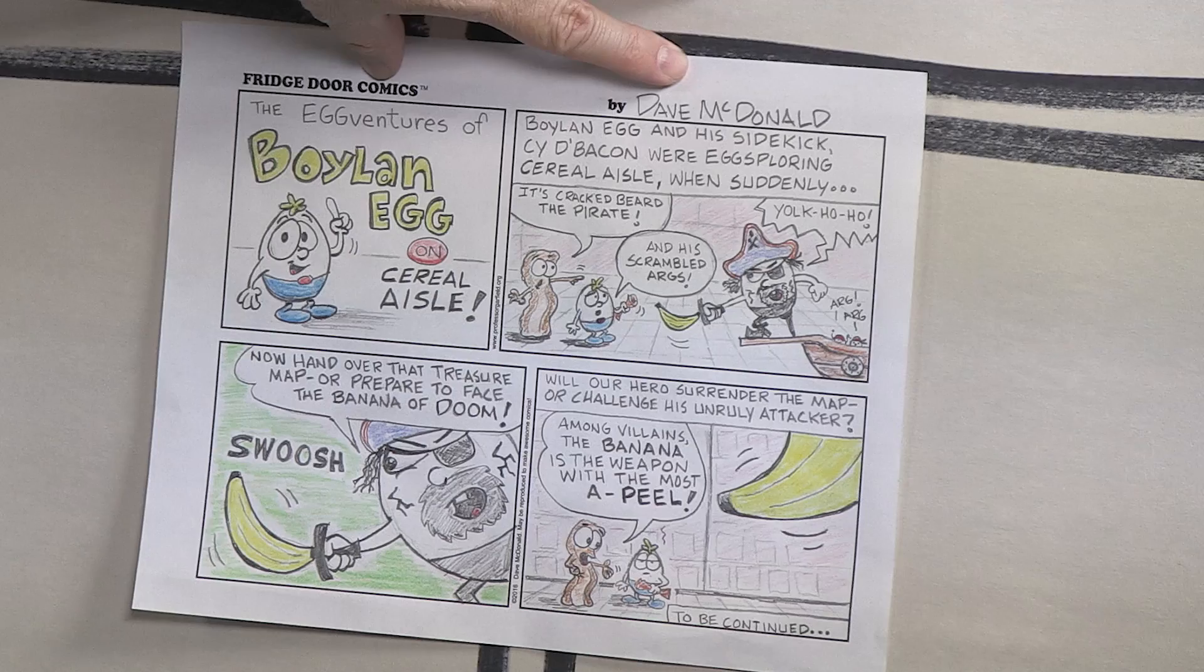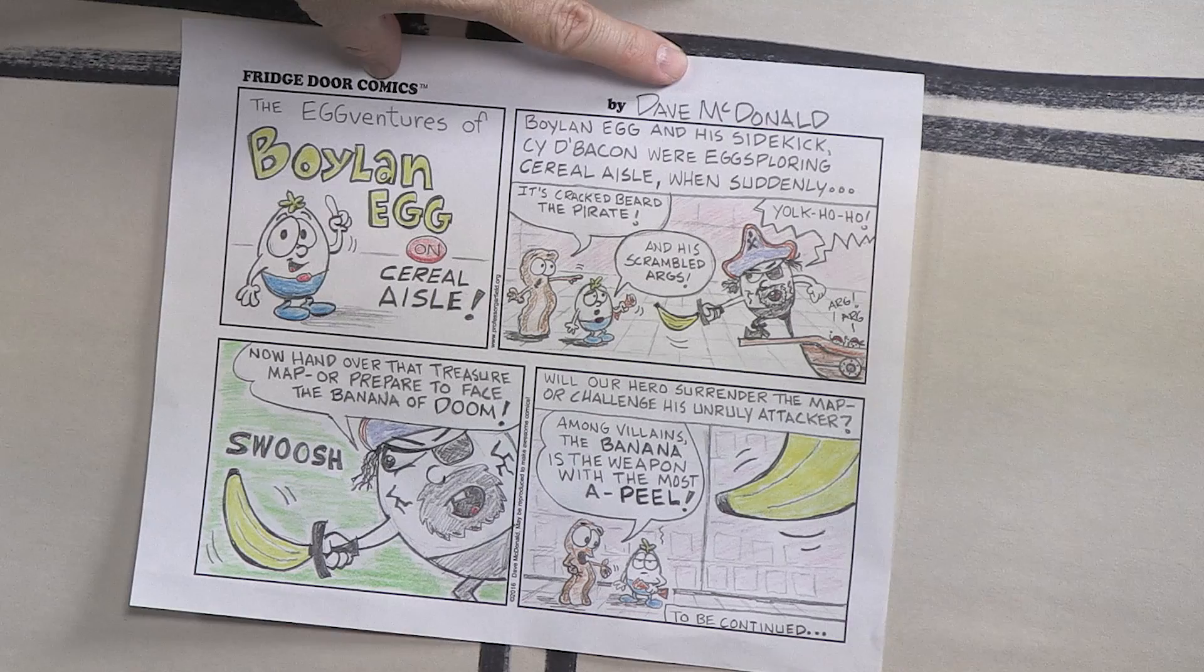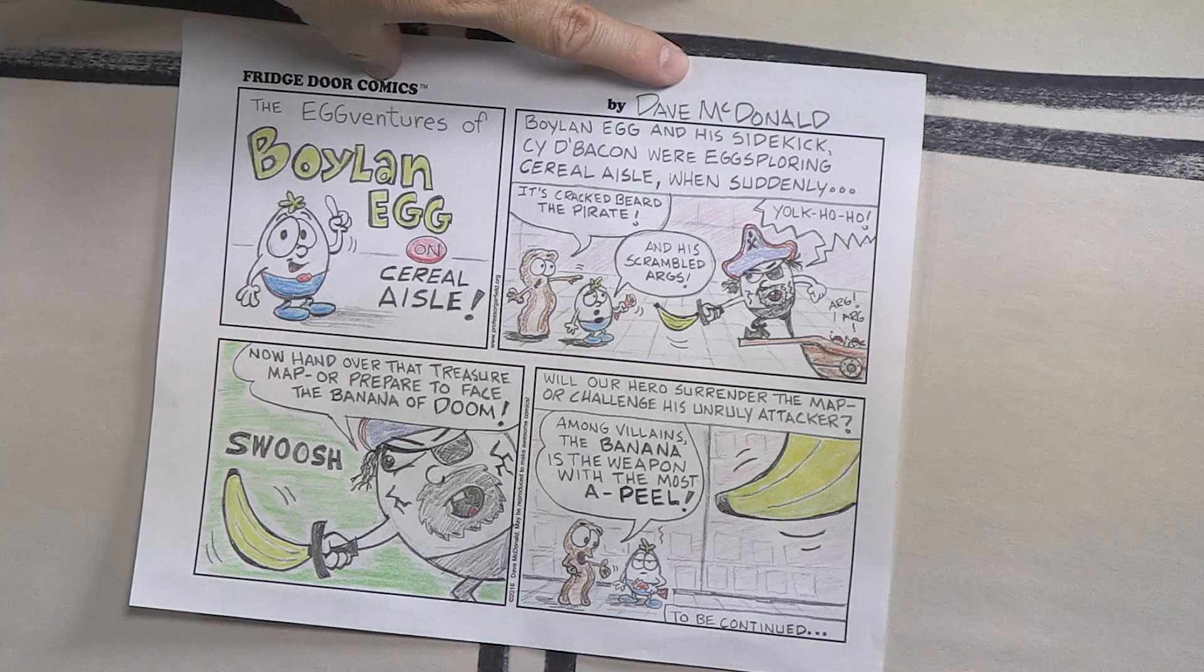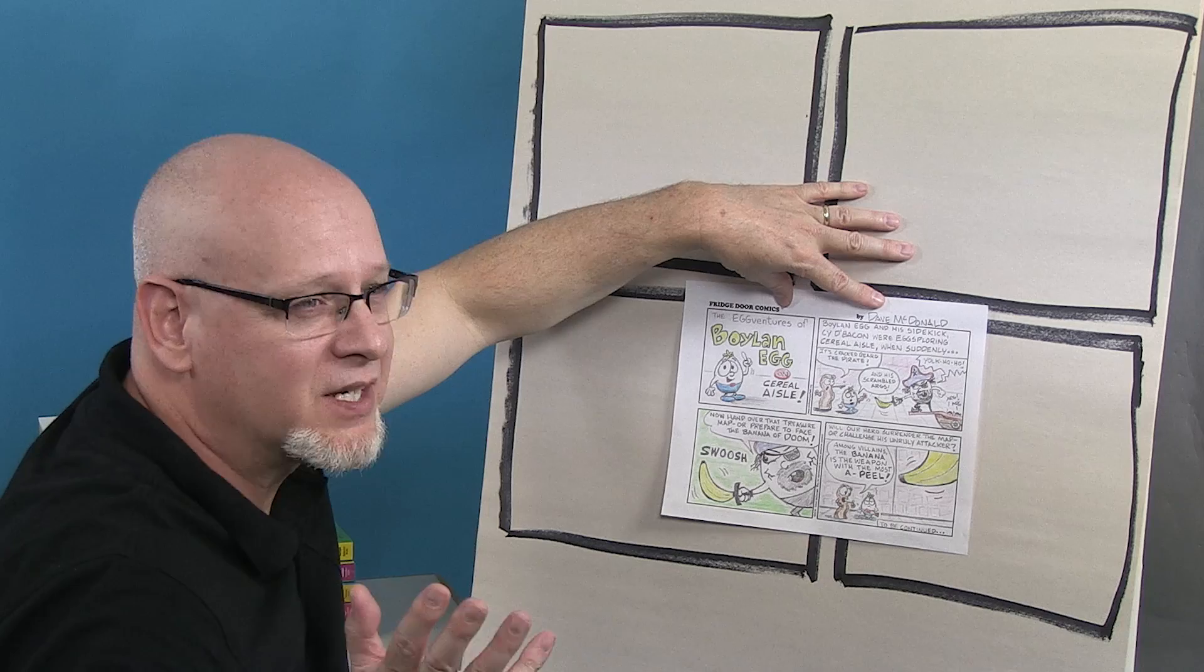Final panel. Will our hero surrender the map or challenge his unruly attacker? Among villains, the banana is the weapon with the most appeal. And of course, to be continued... with the banana of doom in the foreground.